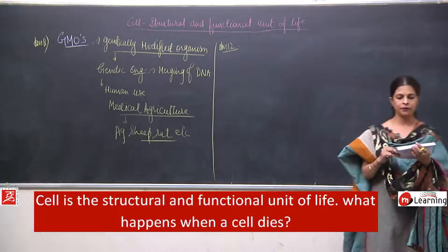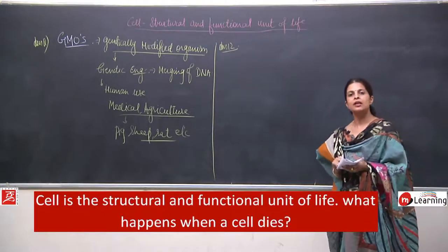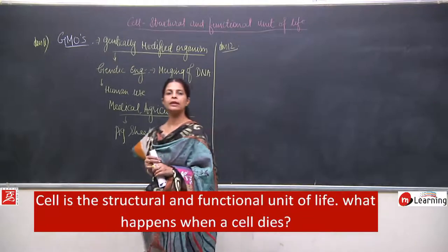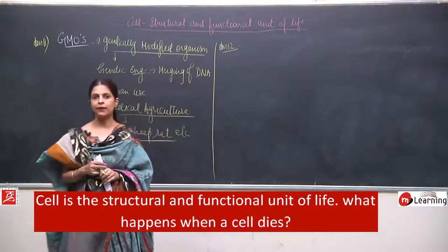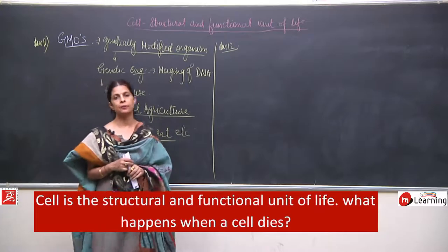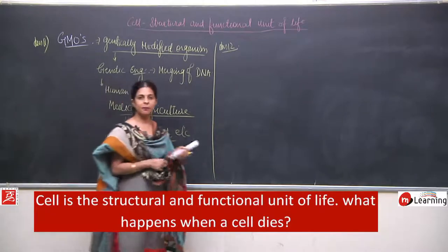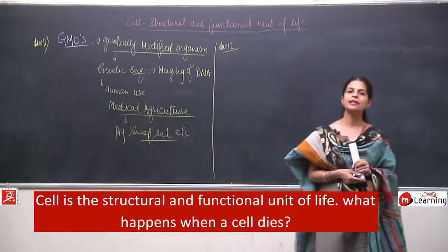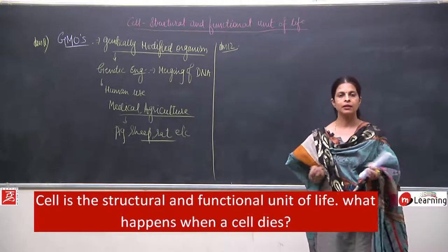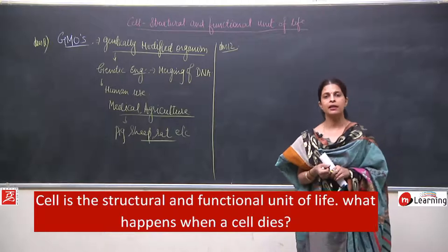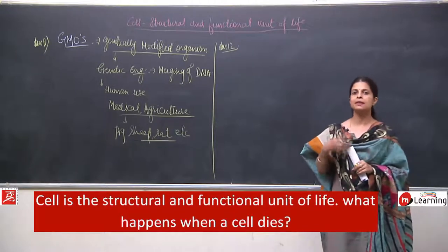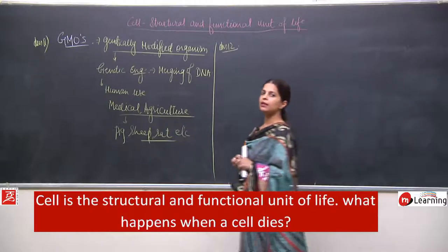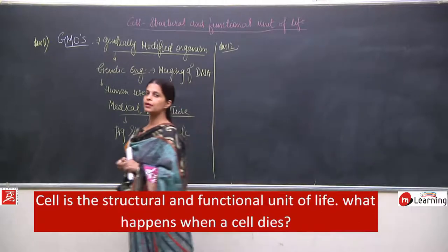What happens when a cell dies? A cell shows all living processes — it divides, grows, and needs nutrition — so obviously a cell will die also. Nothing happens when a cell dies; the old cell is simply replaced by a new cell. This is what cell theory says.